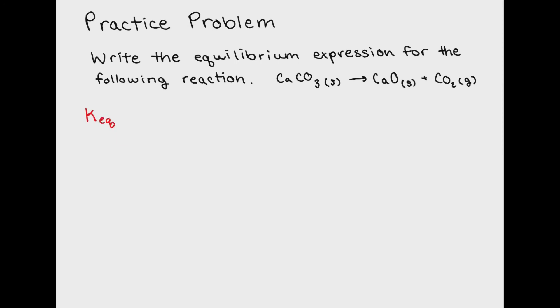Here I've got the reaction CaCO3 solid goes to CaO solid plus CO2 gas. Remember that products over reactants is always our K expression. So our products are the CaO solid and CO2 gas, and our reactants are only the CaCO3 solid. Notice here that there are no coefficients in front of any of our products or reactants. This means that they're all 1.